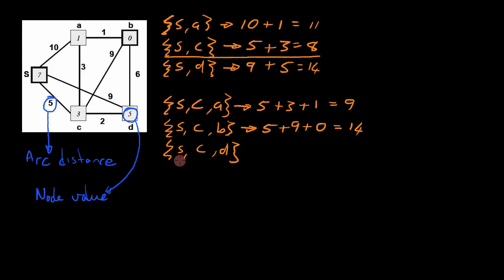For the last path going from S to C to D, we add the arc distance of 5, which is the distance between S and C. We add the arc distance between C and D, which is 2. And we also add the node value of D, which is 5. This will give us a total of 12 distance units.